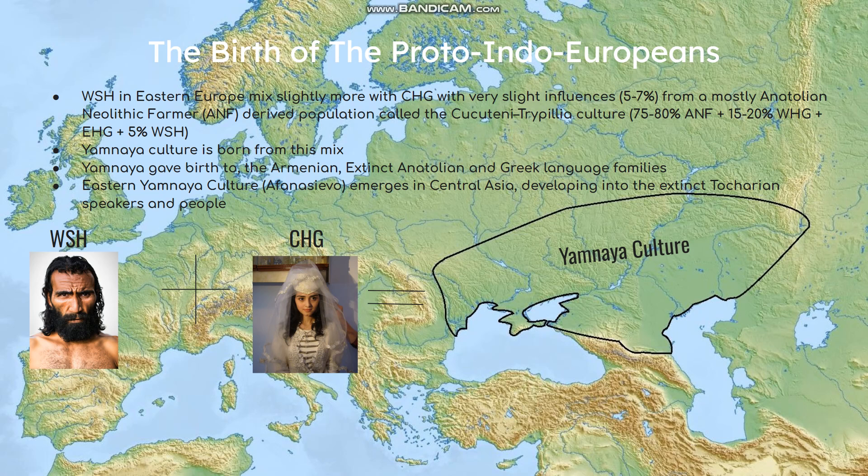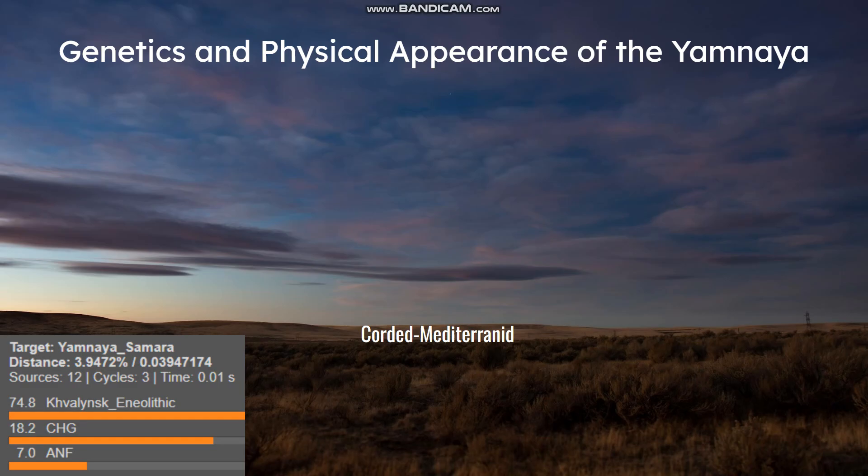Some of these Western steppe herders mixed more with CHG women, and had slight influence from a population mostly of Anatolian Neolithic farmer origin called the Cucuteni-Trypillia culture, which was majority ANF, or Anatolian Neolithic farmer — a population that originated around Anatolia and spread throughout Europe from Anatolia and the Balkans, replacing the majority of the Western hunter-gatherers. They were mostly ANF with a bit of WHG and EHG, plus a very tiny bit of Western steppe herder ancestry. From this mix, the Yamnaya culture was born, and the Yamnaya people gave birth to the Armenian, extinct Anatolian, and Greek language families. An Eastern variant, called the Afanasievo culture, emerged in Central Asia and developed into the extinct Tocharian people.